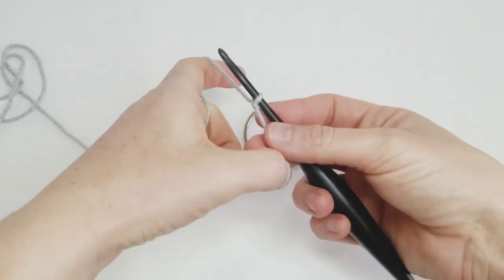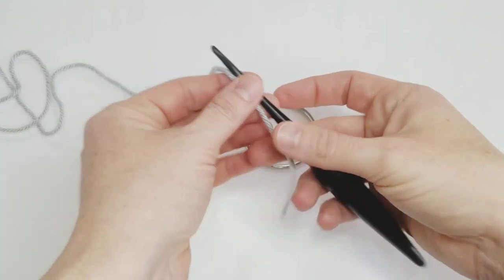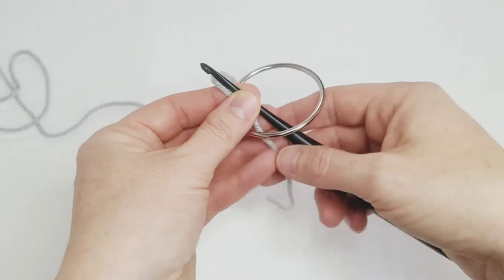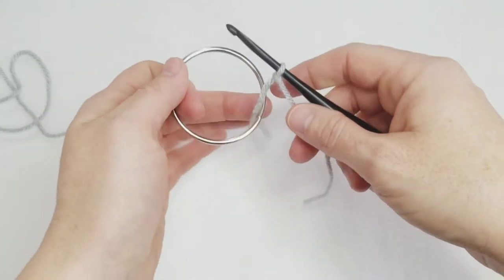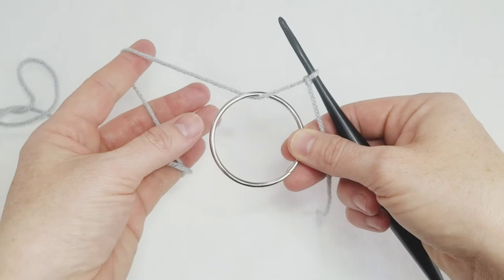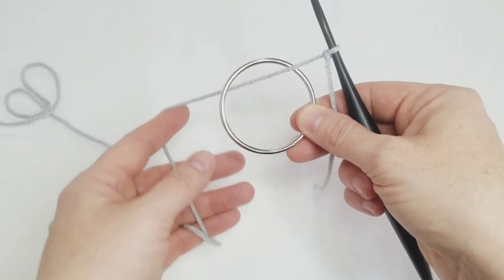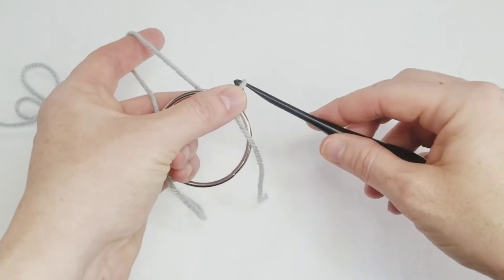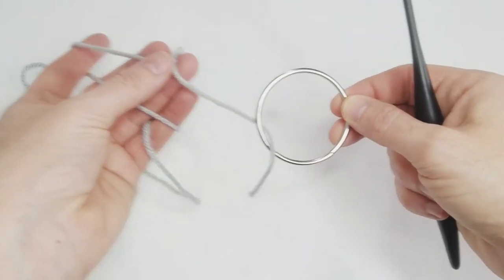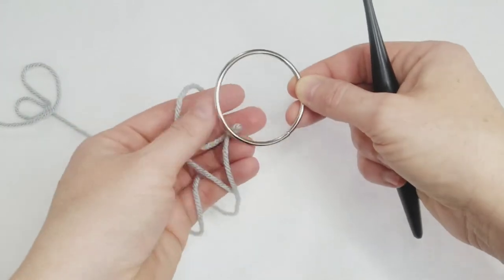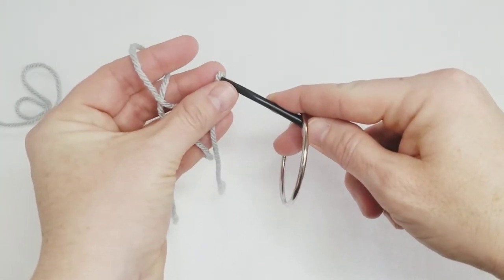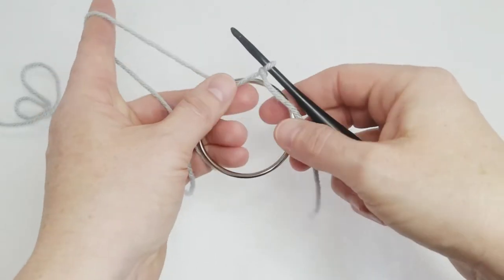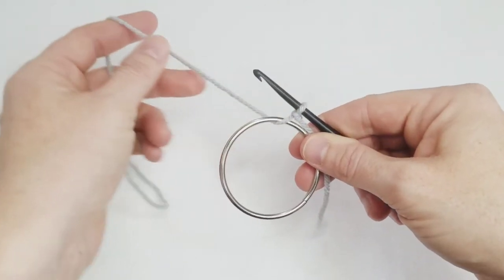I usually put the slipknot on my hook, and then I stick my hook and the tail of my yarn through my hoop. This puts my working yarn through the center of my hoop, which is what you want. You might be asking, well Sarah, that seems unnecessarily complicated. Can't I just reach through the ring and put the hook through the slipknot and pull that through the center? And to you I say, yes, you can.